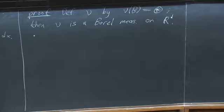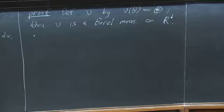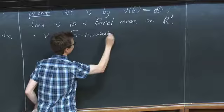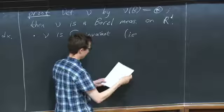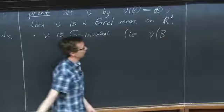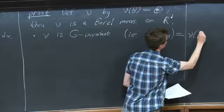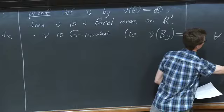This measure has an important key property: ν is SL(d,ℝ)-invariant, meaning G-invariant. In other words, for any Borel subset B and any g in SL(d,ℝ), ν(Bg) equals ν(B). The reason: if you replace B by Bg₁ in the integral, you substitute by multiplying from the right by g₁⁻¹, and then use the right-invariance of the Haar measure. This is a nice exercise to write out carefully.